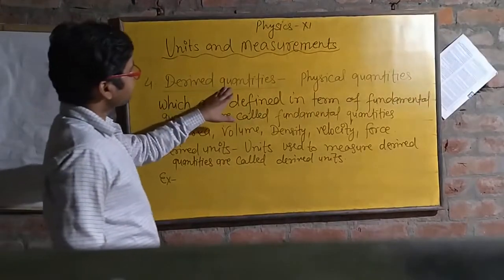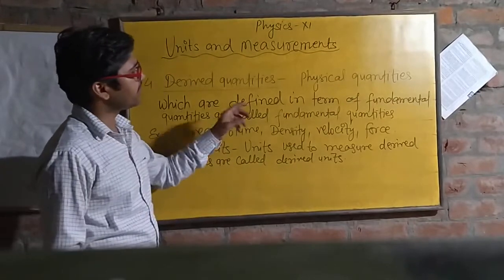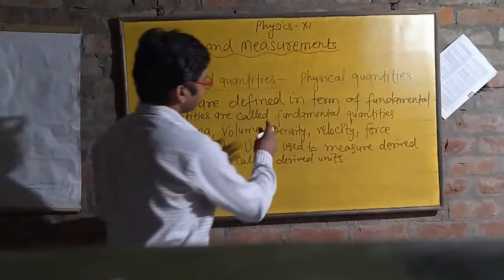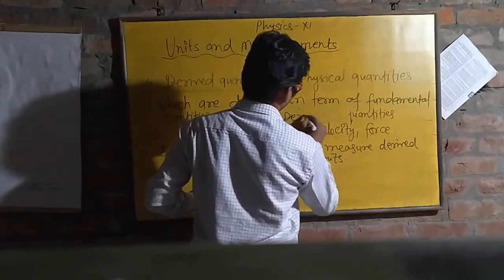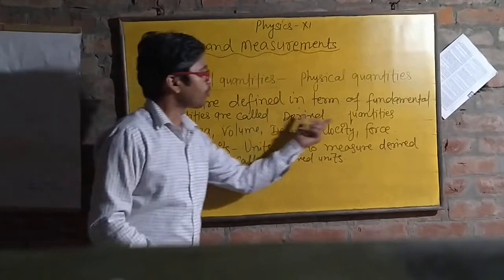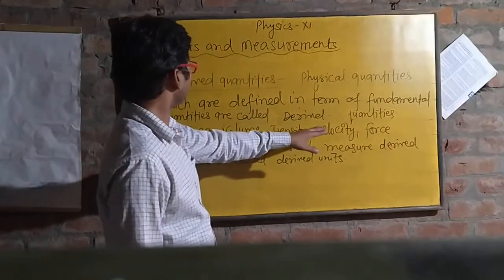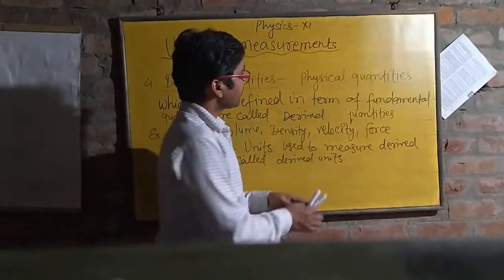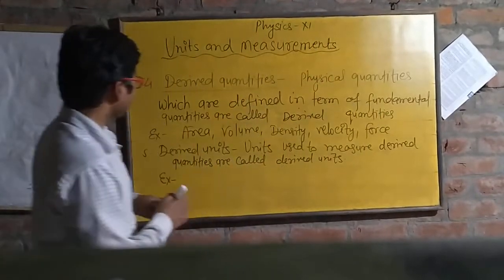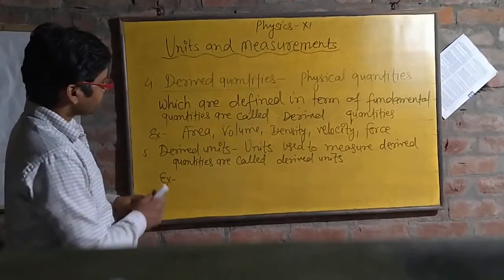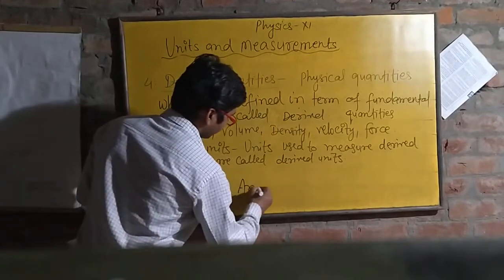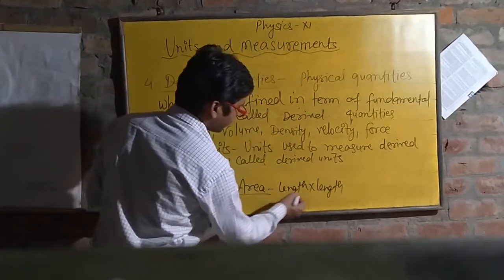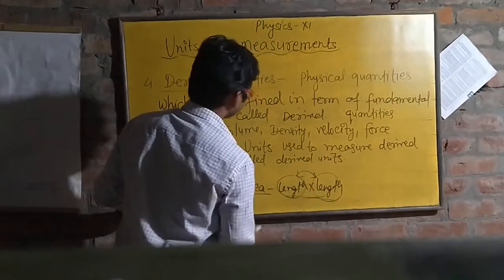The next topic is derived quantities. Physical quantities which are defined in terms of fundamental quantities are called derived quantities. Derived quantities are those quantities which are derived from fundamental quantities. For example, area — area equals length times length — it means area is related to length, so area is a derived quantity.